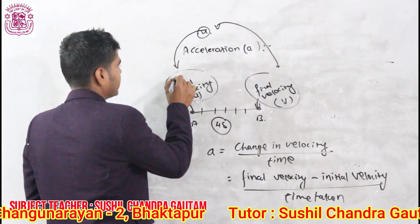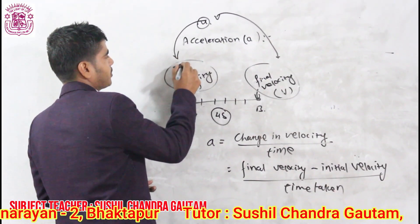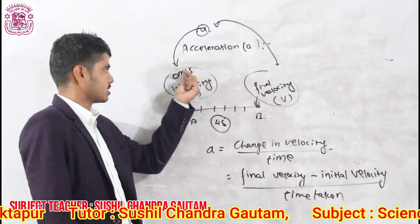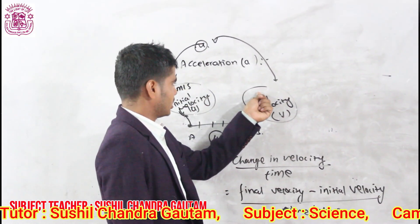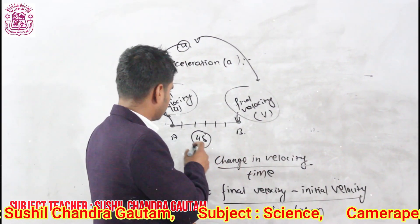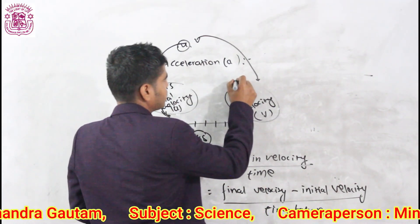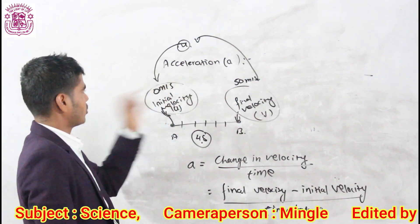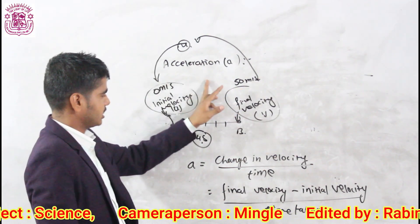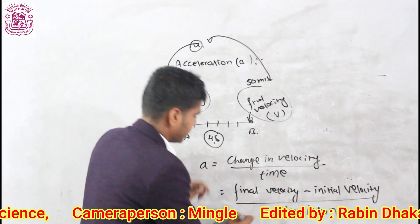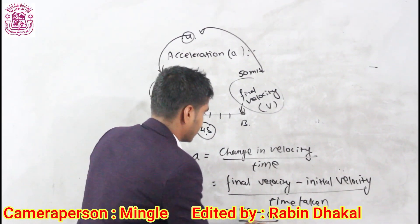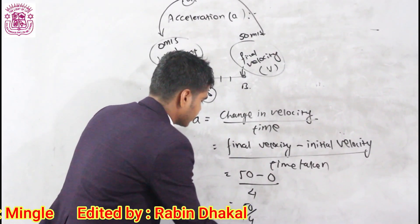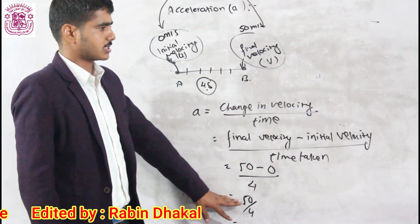For example, if a body starts its motion from rest — that is, 0 meters per second — and travels for 4 seconds gaining a velocity of 50 meters per second, then the acceleration is 50 minus 0, divided by 4. That gives 50 divided by 4. You can easily calculate the acceleration from this.